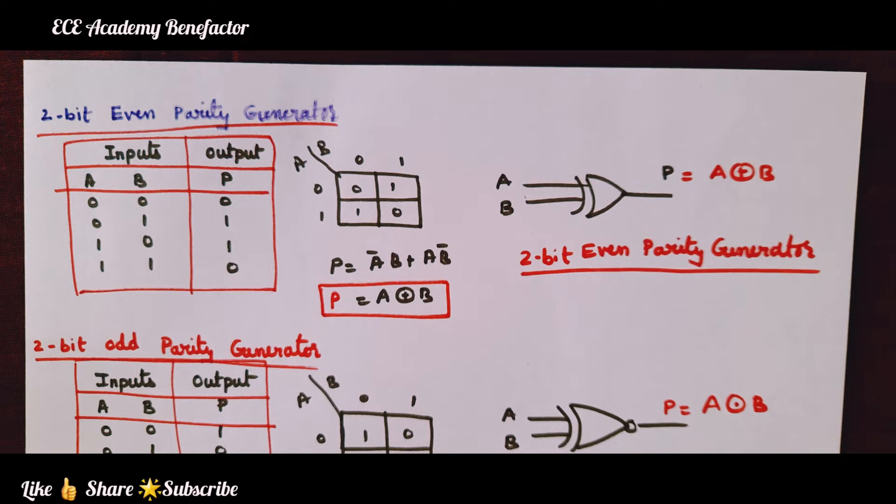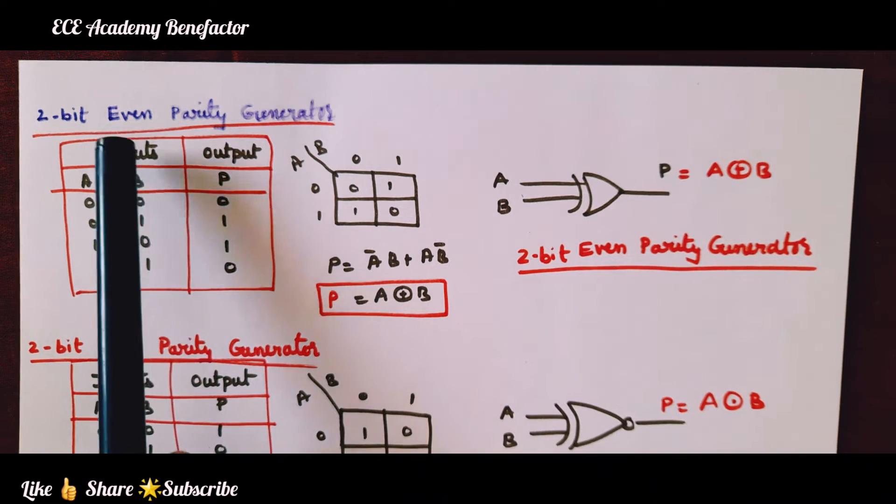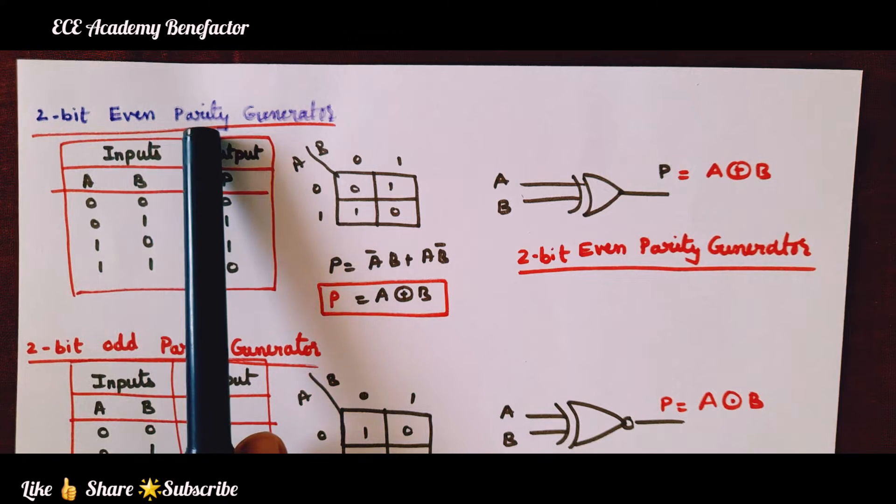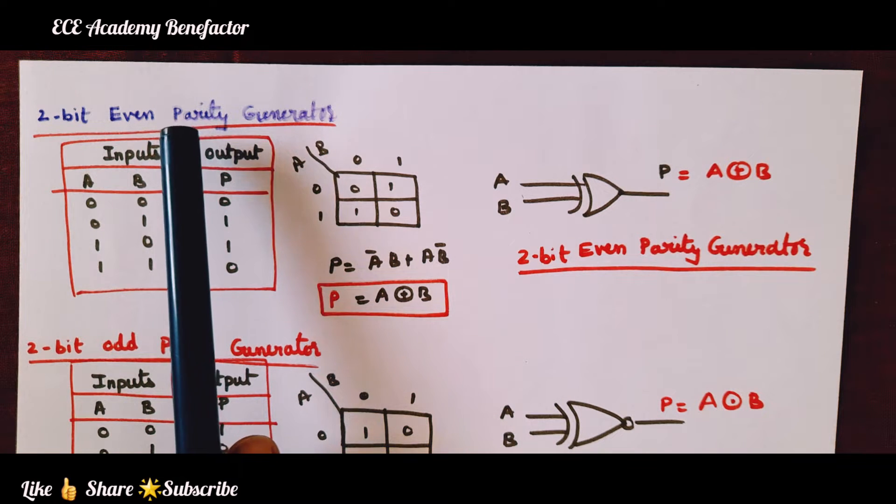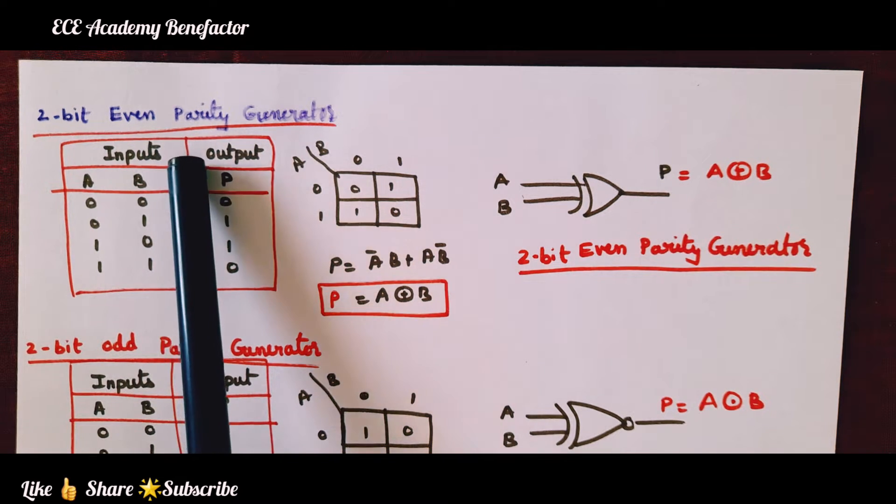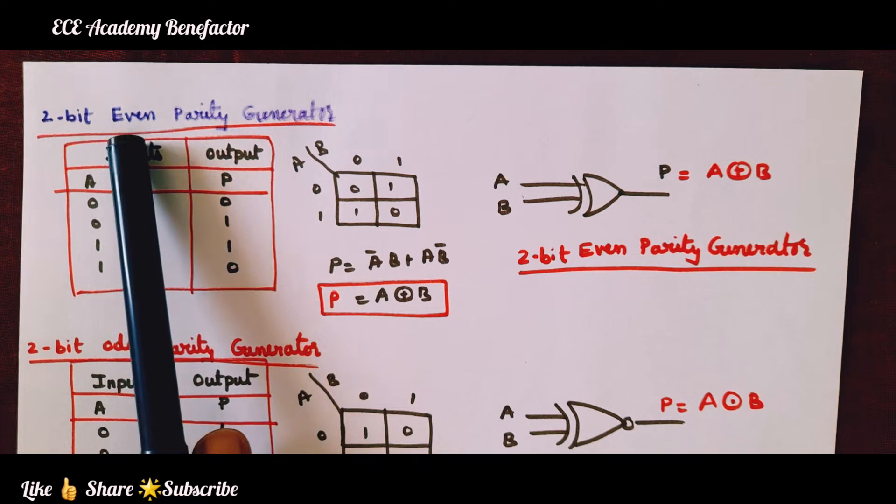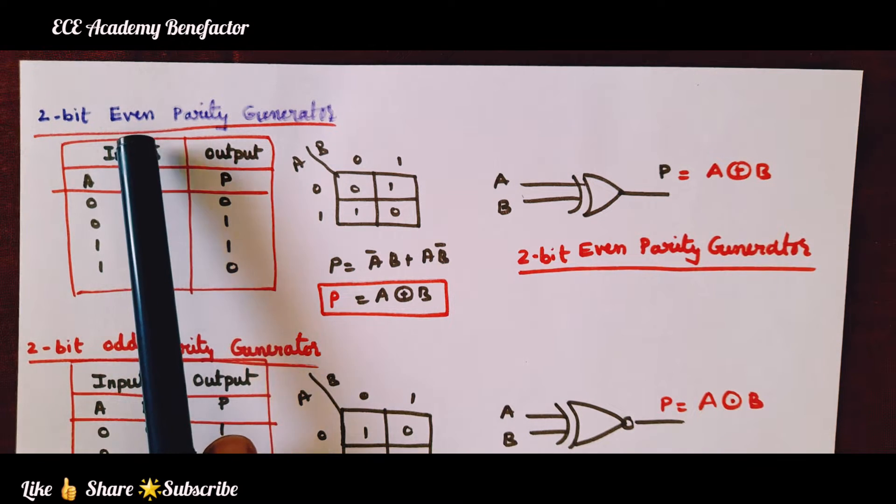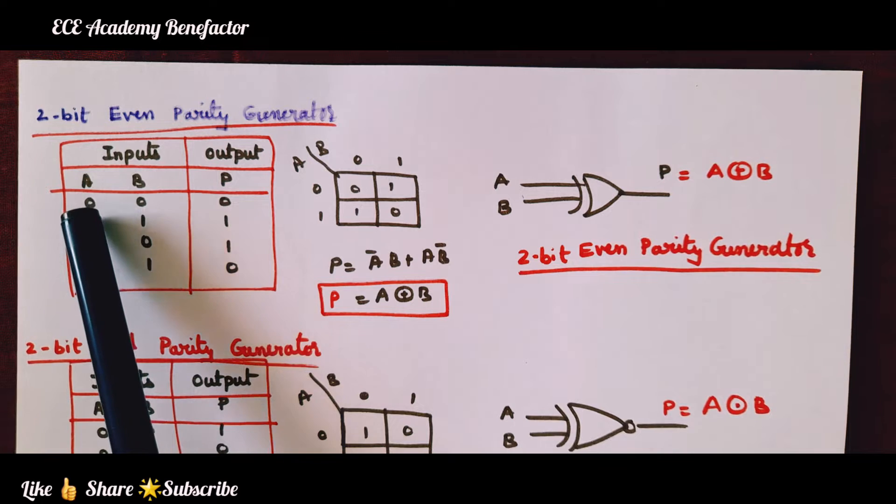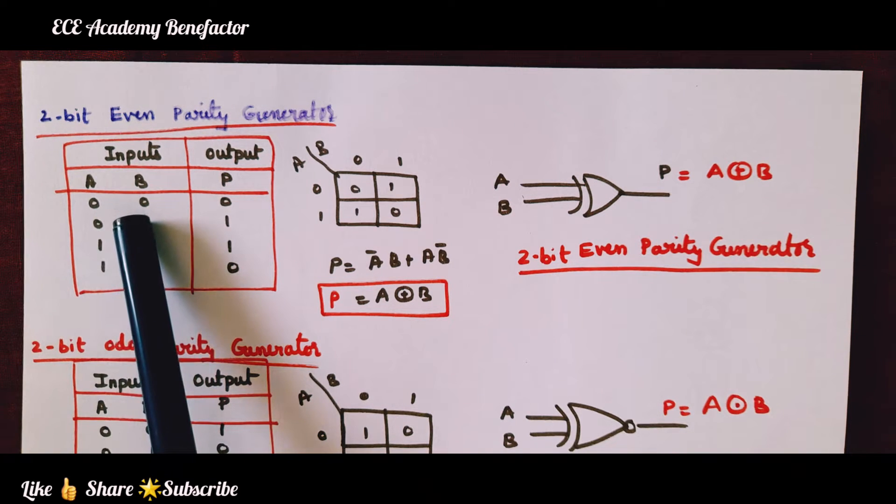Let us start with 2-bit even parity generator. What is a parity generator? It will generate one extra bit. If we are designing even parity generator, we will see that the combination or the information input which is transmitted will have even number of 1s in it.